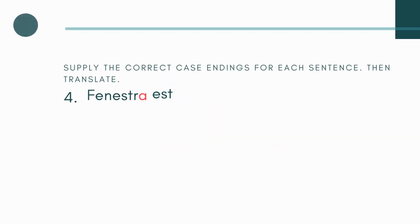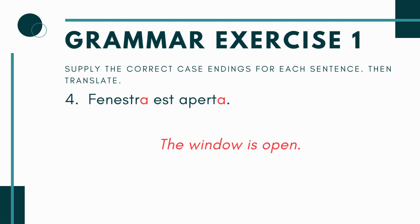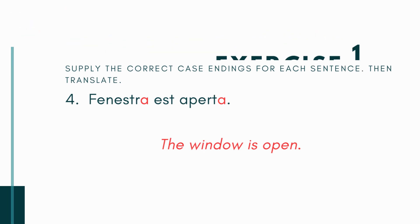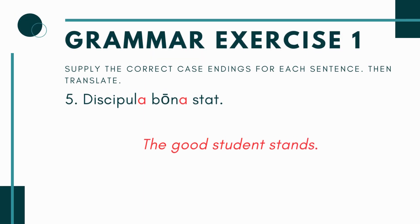Number 4: 'fenestra___ est aperta___.' Again our noun and adjective both have blanks, but here the verb is est, meaning 'he, she, or it is.' Since the verb is singular, the subject needs to be singular — so it's fenestra with an -a ending, not fenestrae. And since the noun is singular, the adjective describing it is also singular. So you say: fenestra est aperta — the window is open.